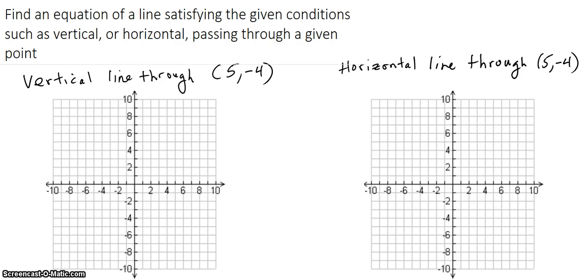Find an equation of a line satisfying the given conditions, such as vertical or horizontal, passing through a given point. So here is the given point, and on this one we're supposed to find a vertical line through (5, -4).